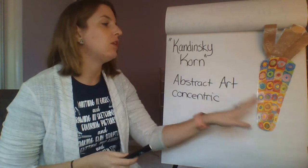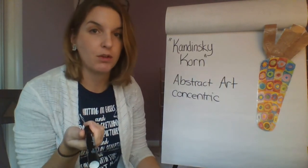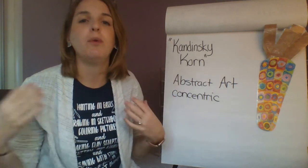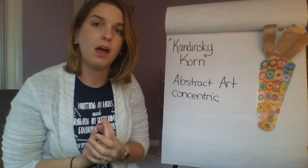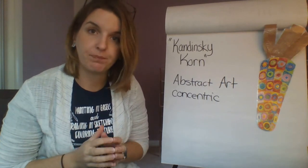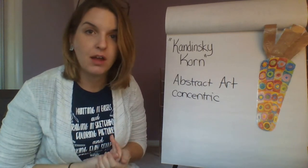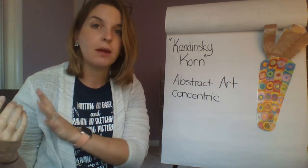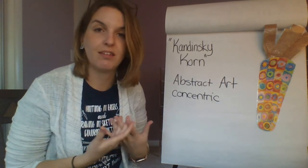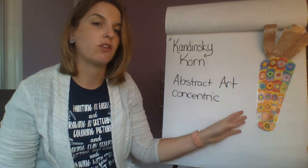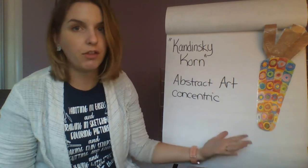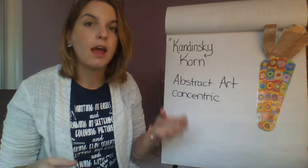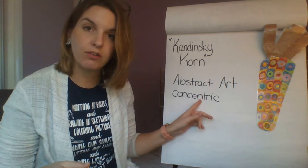I'm going to post an example of his work within the lesson so you can see it. He used these concentric circles to experiment with different types of colors and what they look like next to each other. Think back to when we learned about the color wheel and complementary colors — red and green, purple and yellow, blue and orange all make each other look brighter. But red next to orange won't look as bright because they're so similar. Kandinsky used concentric circles to play with those color relationships.